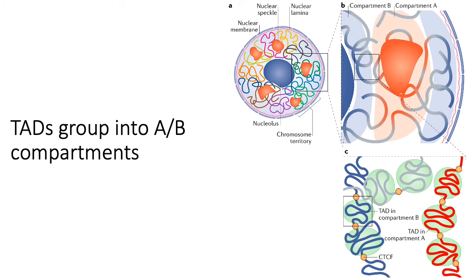It's worth pointing out that a single TAD unit consists of one continuous section of one chromosome. But TADs themselves can assemble into larger compartments — the A/B compartments. The A compartment generally corresponds to transcriptionally active regions, where TADs belonging to the same A compartment can even interact between themselves, even though these are cross-TAD interactions.